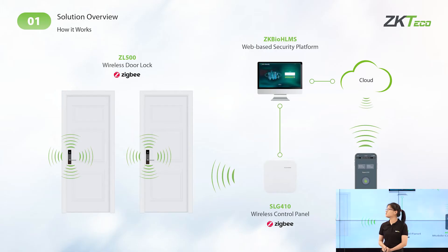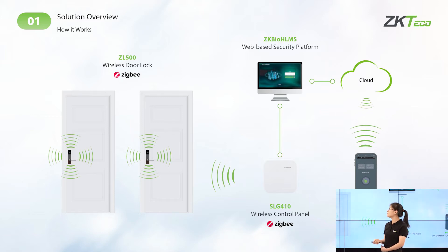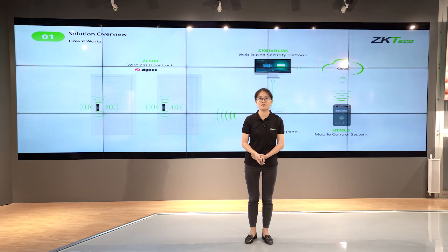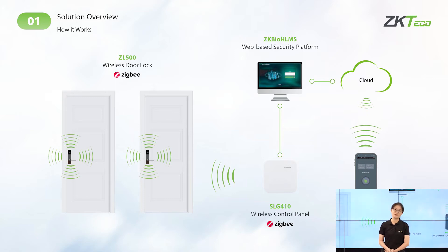Based on ZigBee communication, all the information and data will transfer and exchange through your mobile phone to our cloud server, then go to our web-based security platform, and lastly go to the wireless ZigBee locks. With our solution, you can unlock your guest room doors with your smartphone — you will never have to bring mechanical keys and never worry about losing them during your journey.